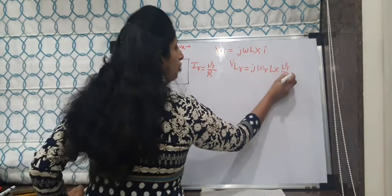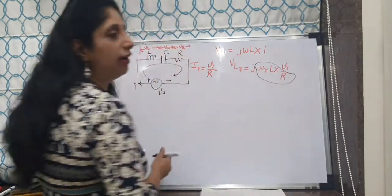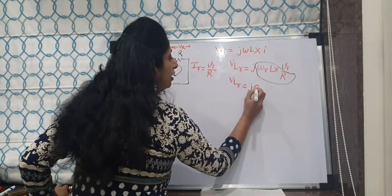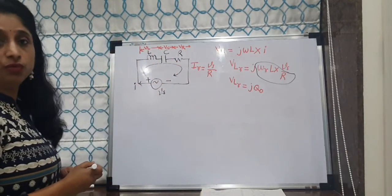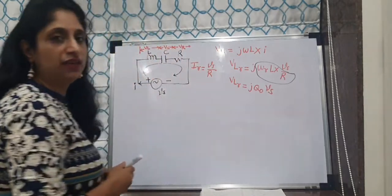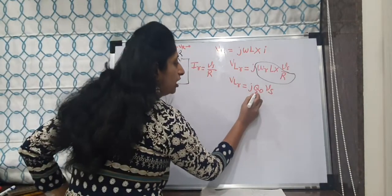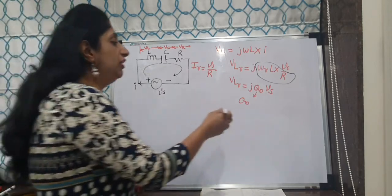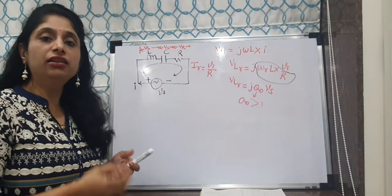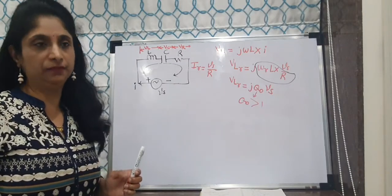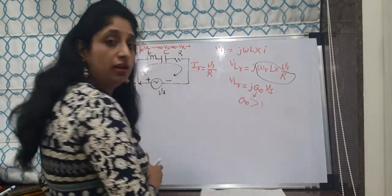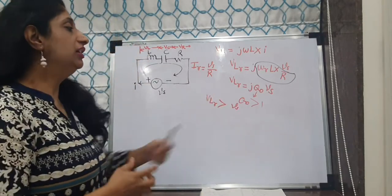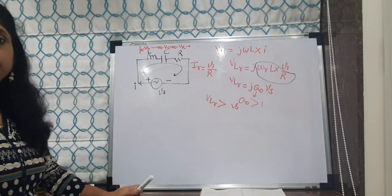The term ωL/R is the quality factor at resonance. So the inductor voltage at resonance is j·Q0·Vs. Since Q0 is the quality factor indicating energy storing capacity, Q0 must be greater than 1, meaning energy stored is greater than power dissipated. Therefore, the inductor voltage at resonance is greater than the supply voltage by Q0 times — so it is acting as a voltage magnifier.